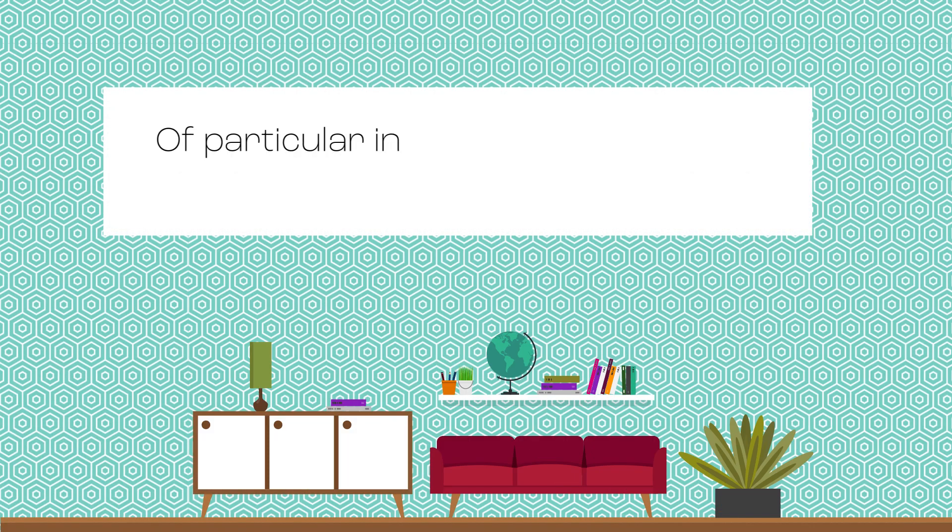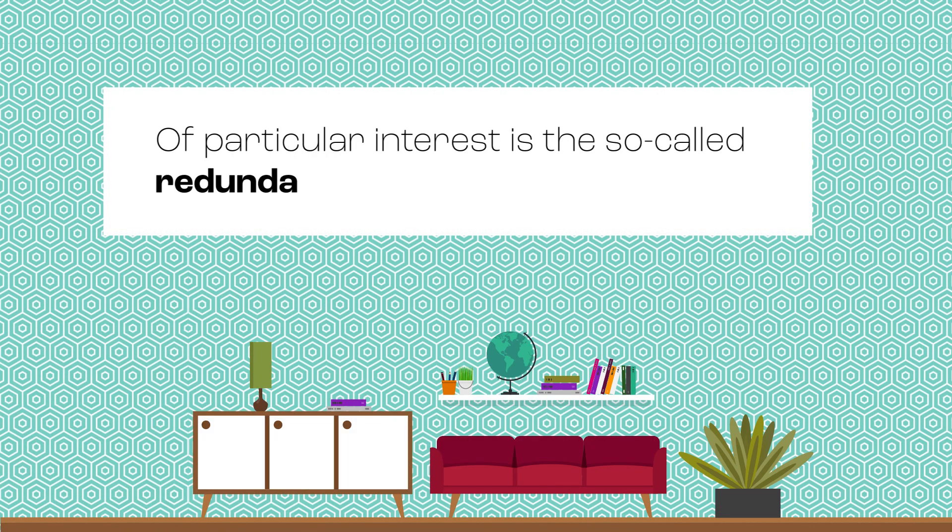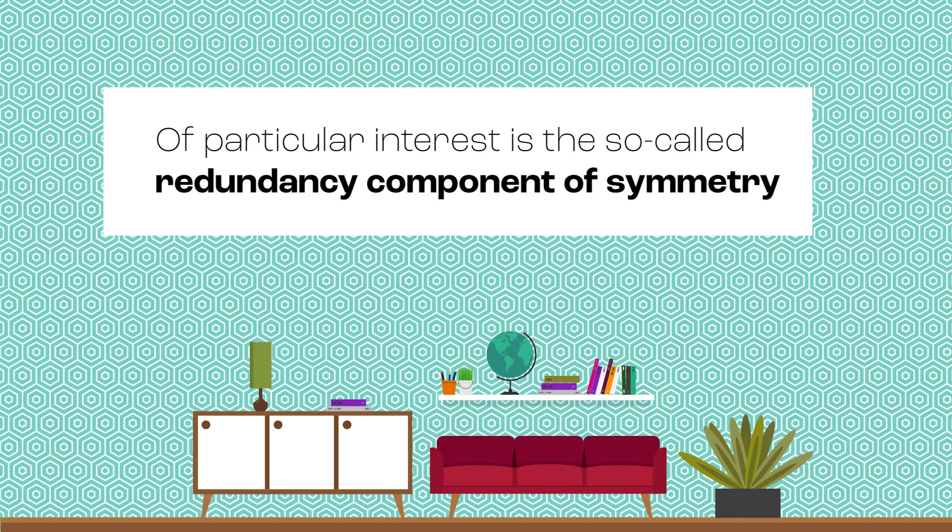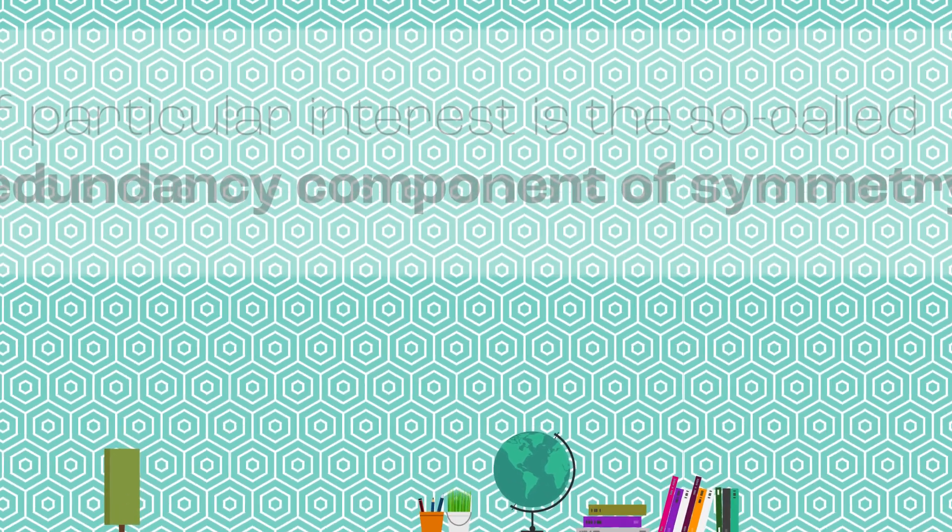Of particular interest is the so-called redundancy component of symmetry. Professor Pizlo asks us to consider a wallpaper consisting of a repeating pattern. It could be said that this repetition is redundant because each section of the repeated pattern is the same as the others. But this redundancy, Professor Pizlo explains, is necessary according to our understanding of vision and, critically, the perception of three-dimensional objects.